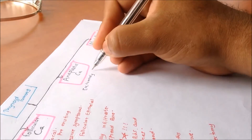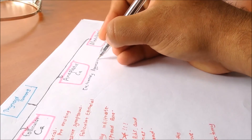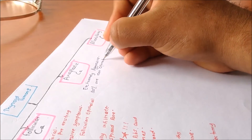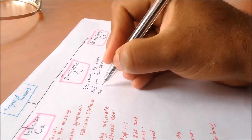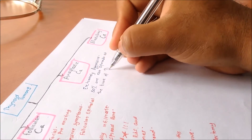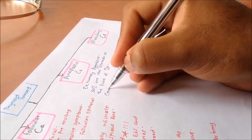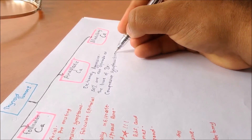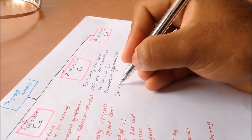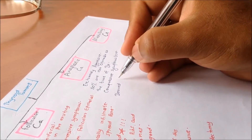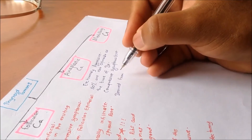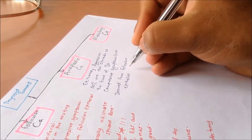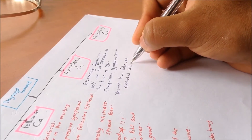Anaplastic carcinomas are extremely aggressive. Fifty percent of cases are inoperable at the time of diagnosis. These cancers present with compressive symptoms, such as difficulty in breathing. They also have a follicular cell origin. The frequency is around 10%, and anaplastic cancers are mostly seen in old age — over 60 years old.